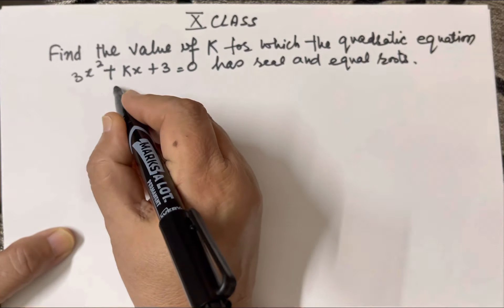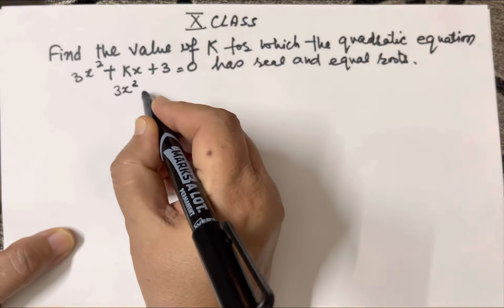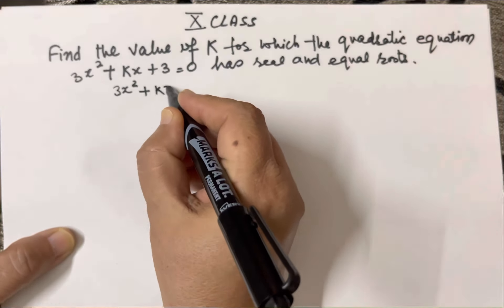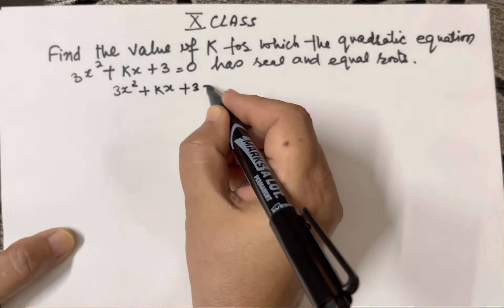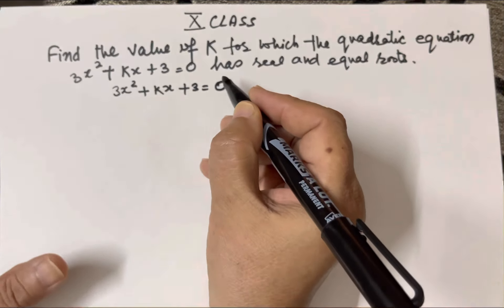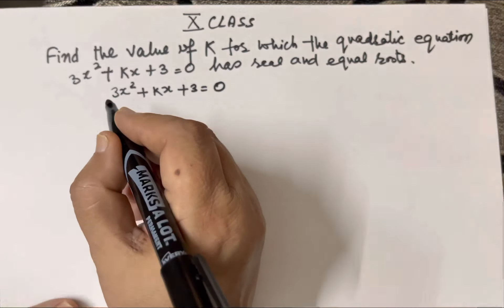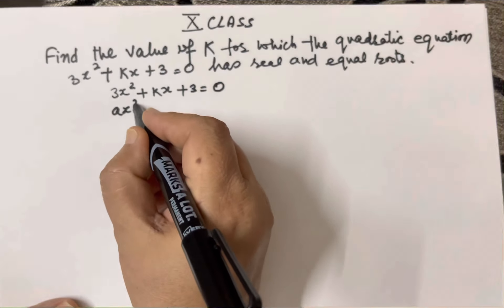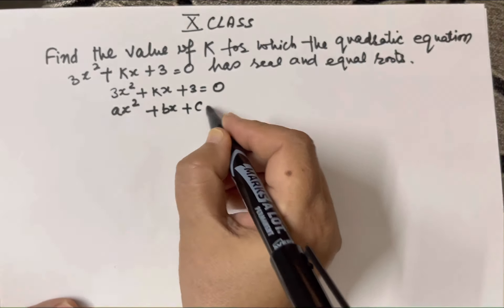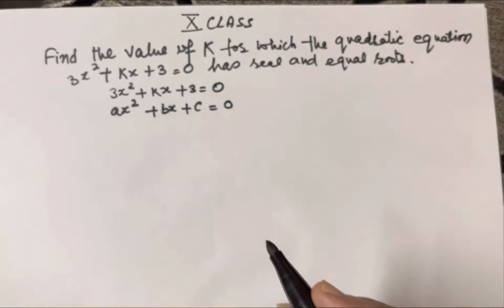The equation is 3x² + kx + 3 = 0. We will compare this equation with ax² + bx + c = 0.